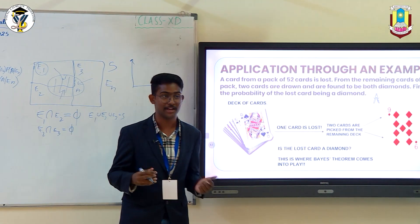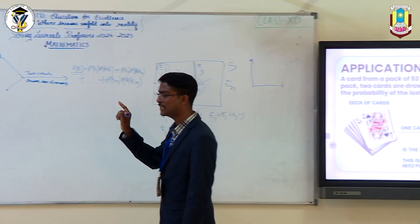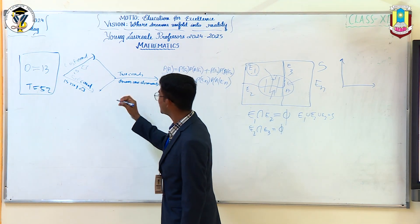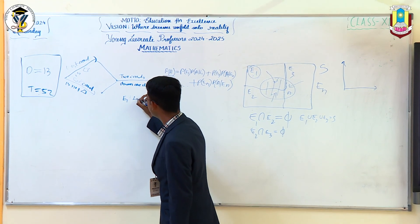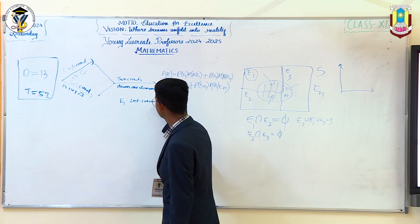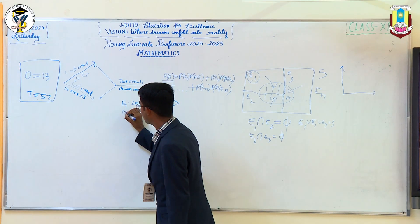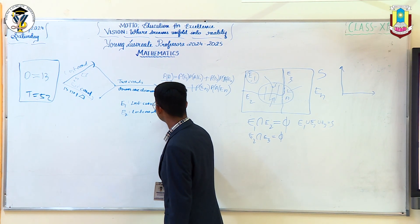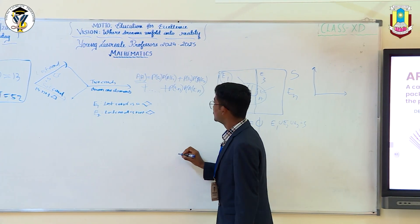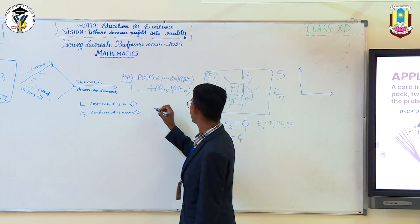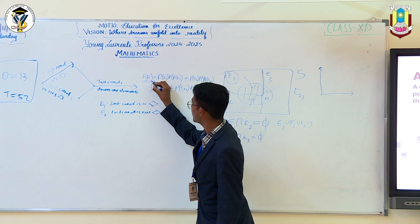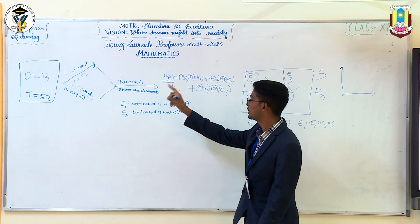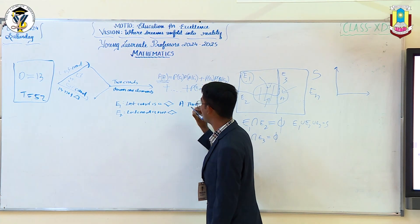The next step would be to identify the events. It becomes really easy to identify your events from the question when you are done with your arrow diagram. As you guys can see, your first event E1 is the lost card being a diamond, and the second event E2 would be that the lost card is not a diamond. I will be taking the event which has already occurred to be A. What is that event? It is the two cards drawn found to be diamonds.